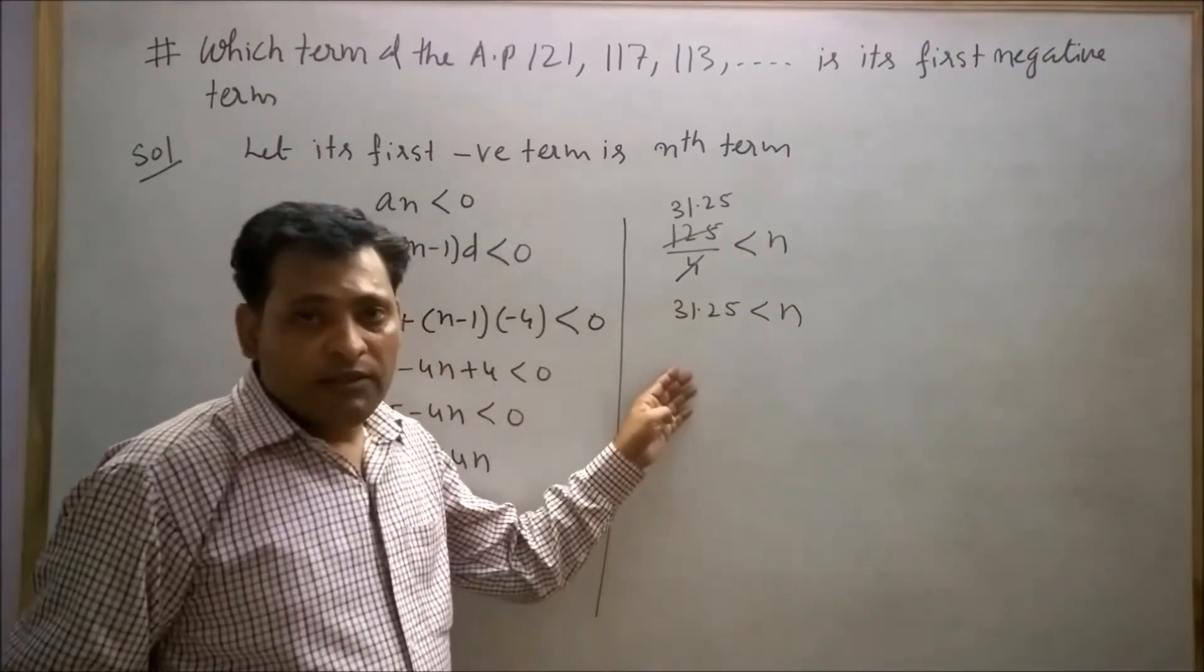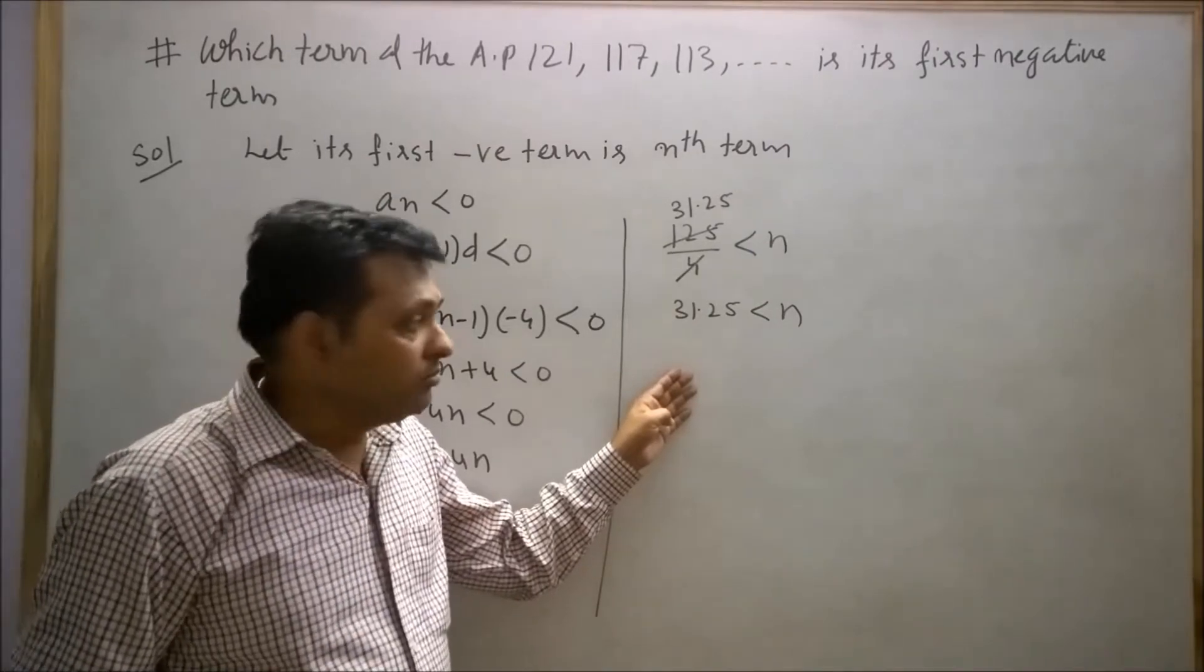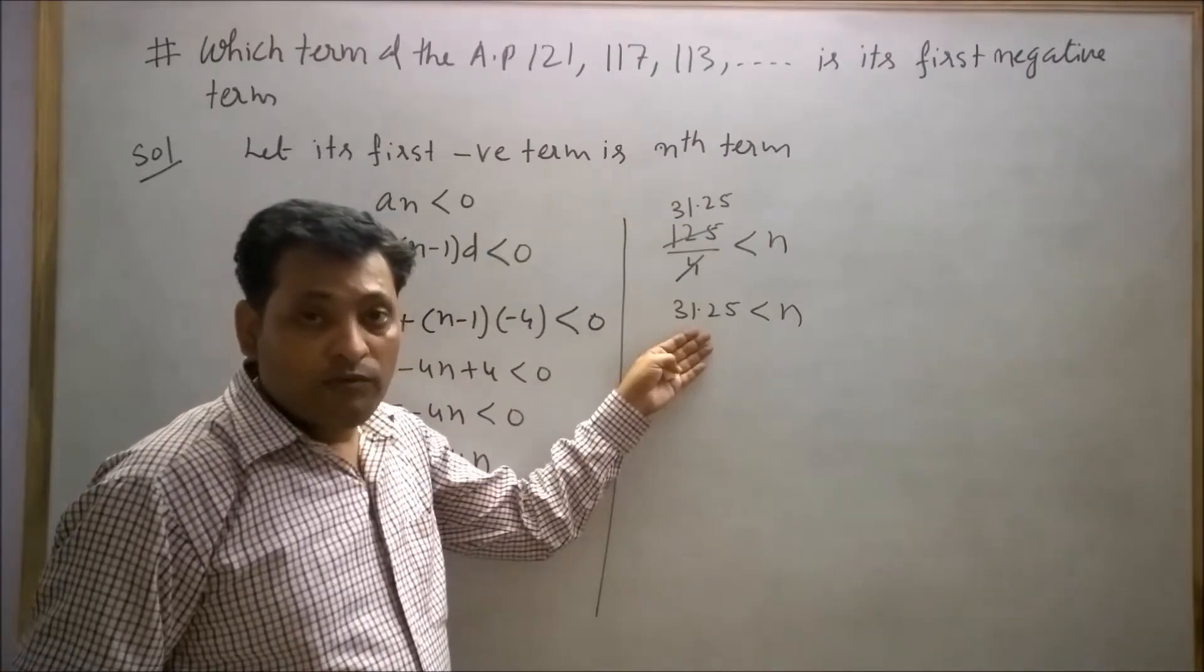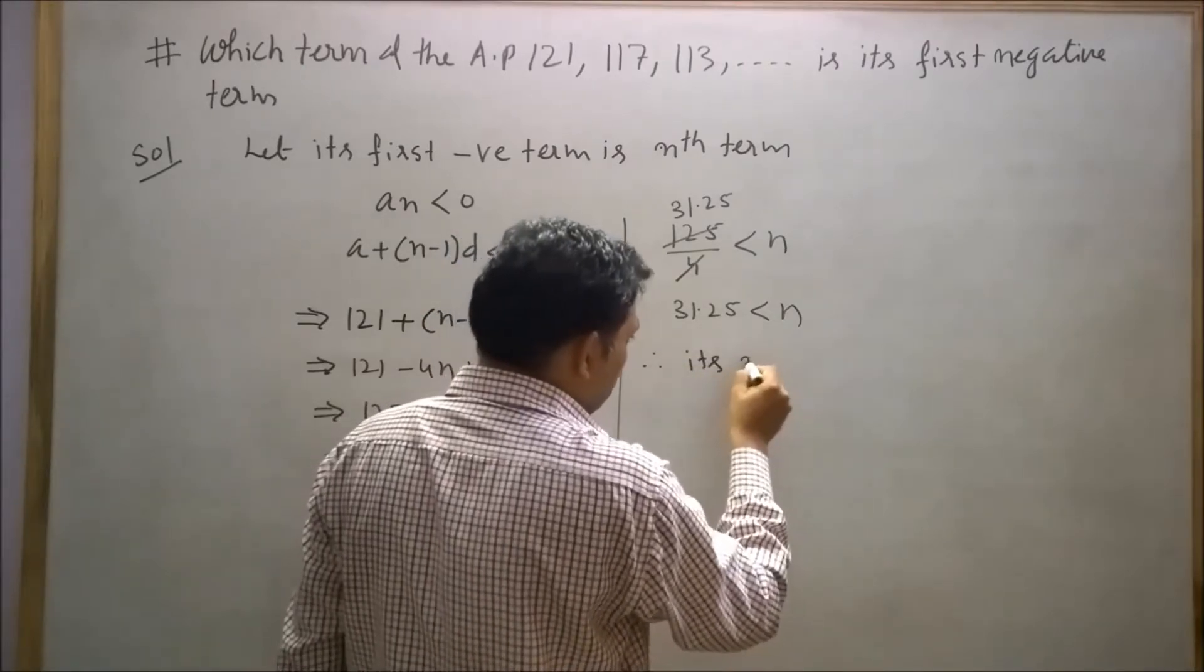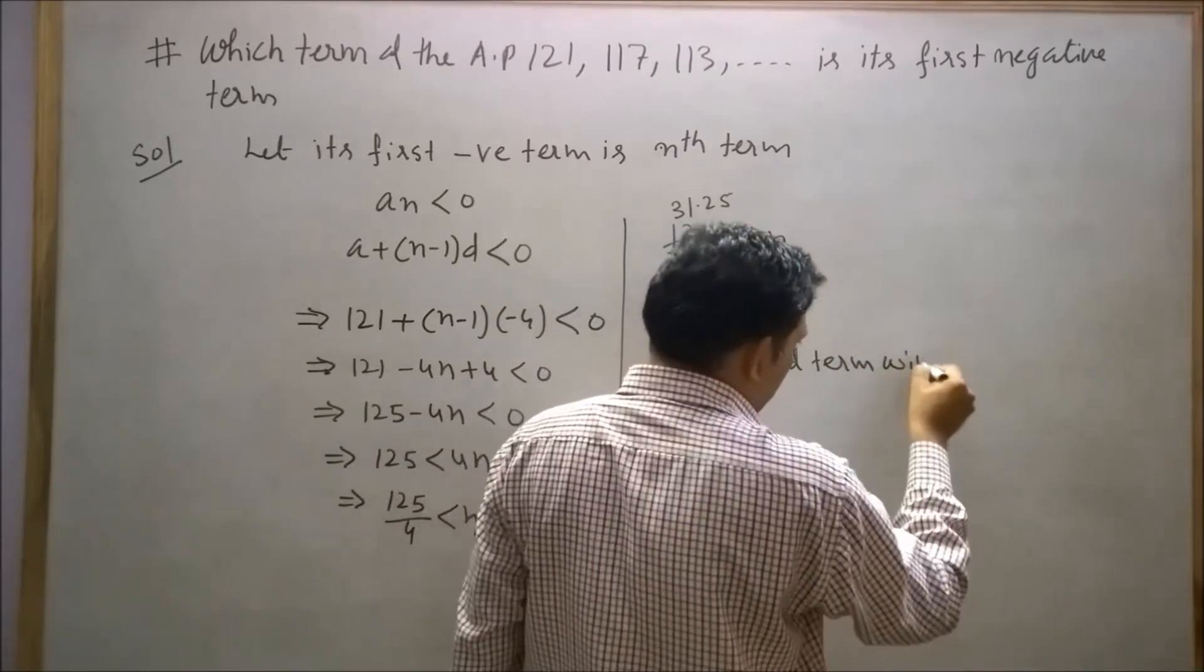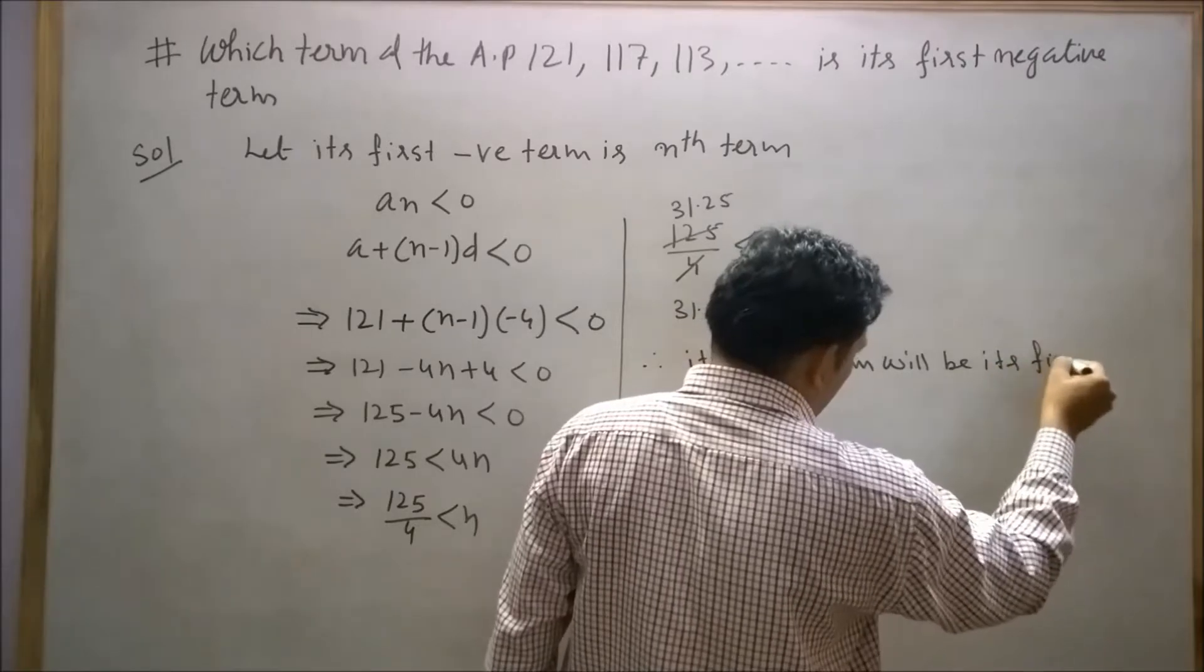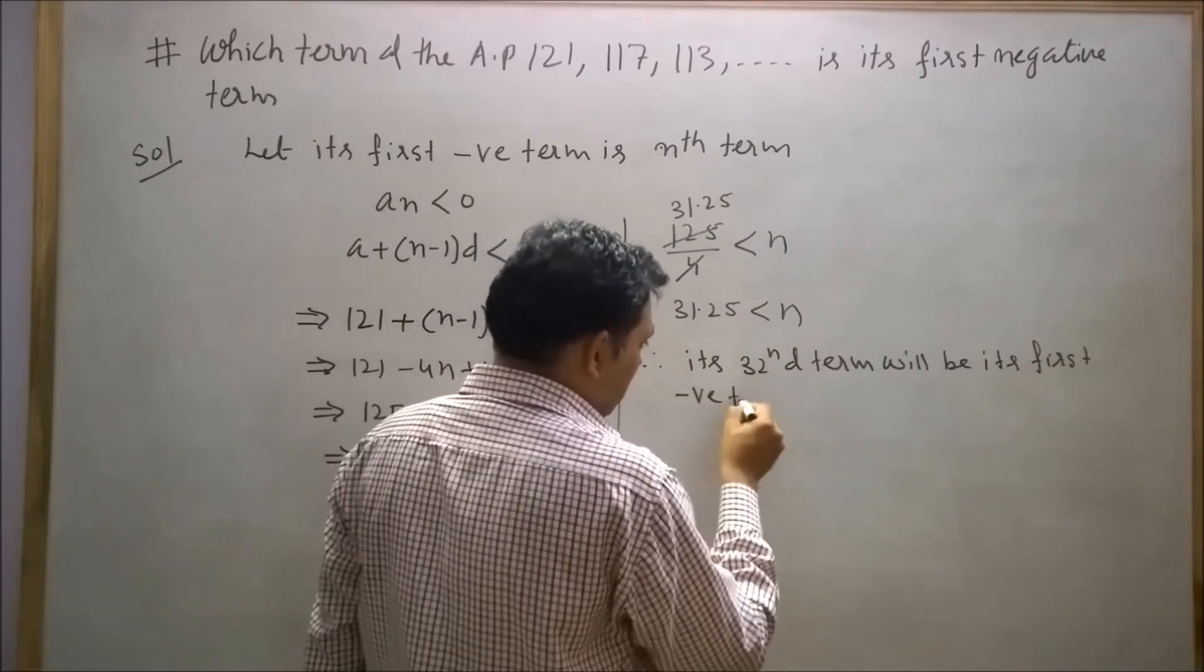Since we know that N is a natural number, the number of terms is always a natural number. So the natural number which is greater than 31.25 is 32. Therefore, the 32nd term will be its first negative term.